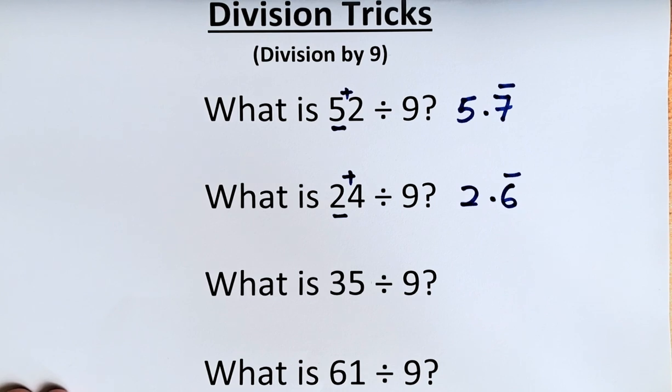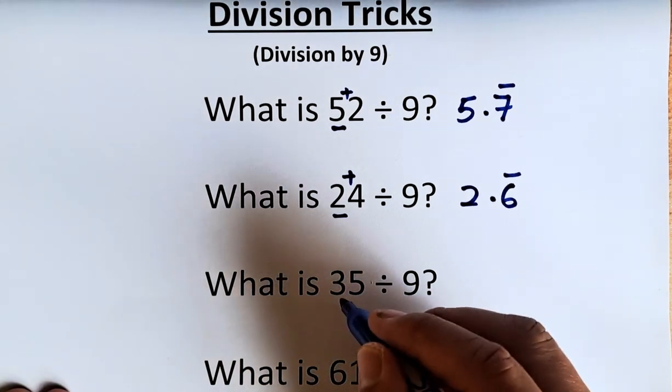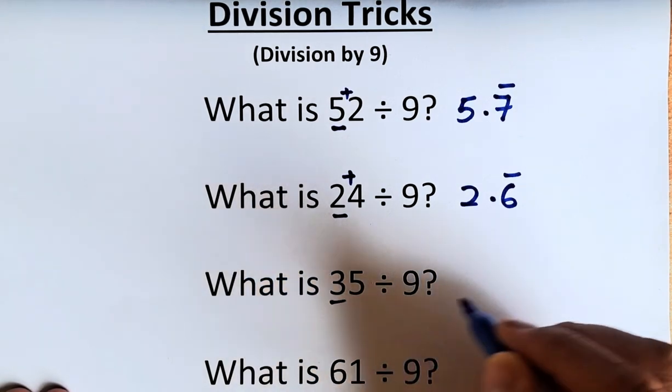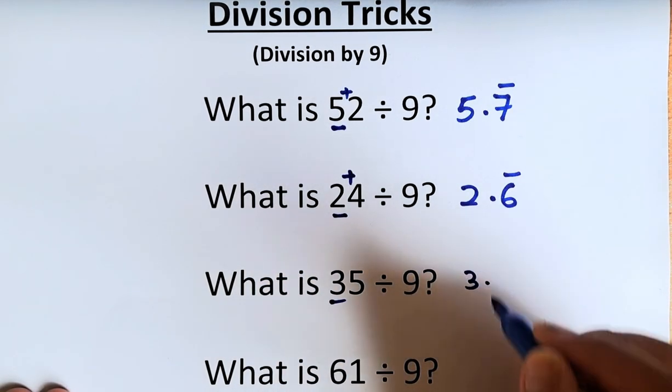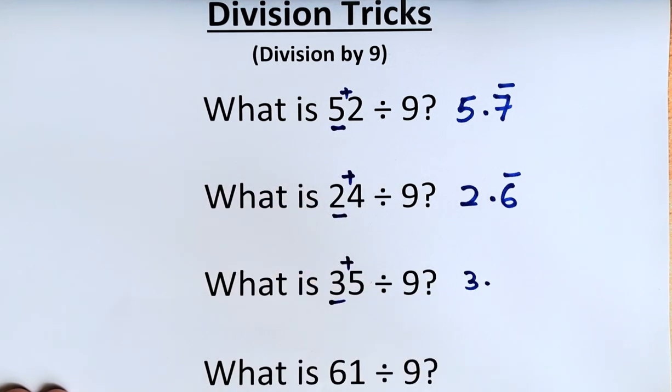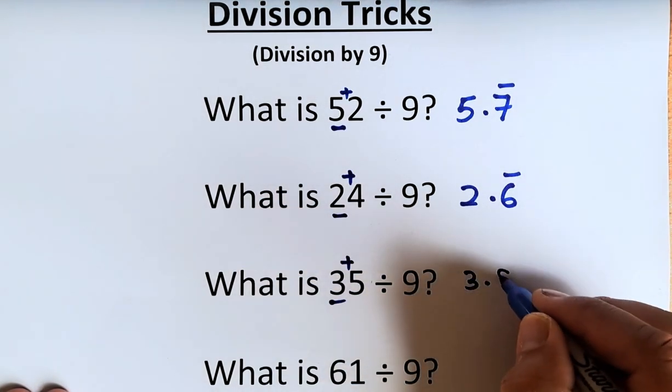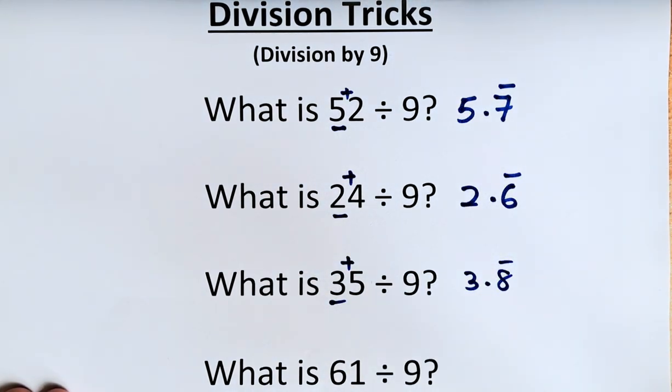Now, the third example. What is 35 divided by 9? Again, now you know the drill. 3 remains. The first digit remains 3. And then you're going to add 3 plus 5. It's going to be 3.8 recurring.